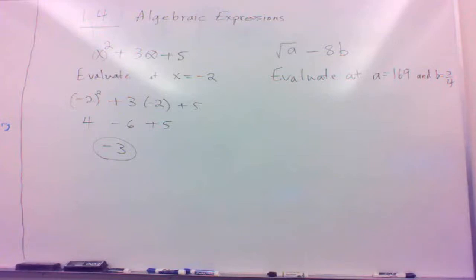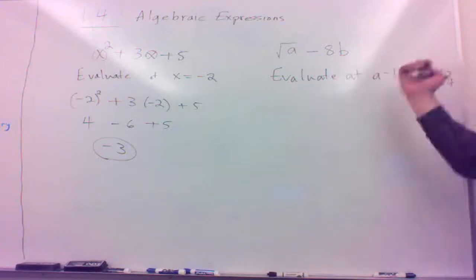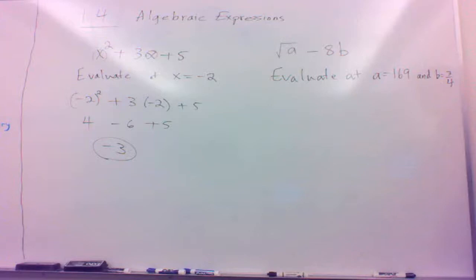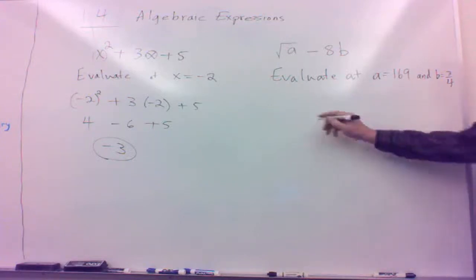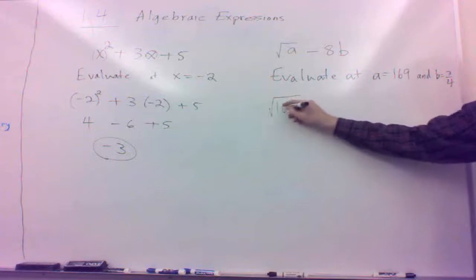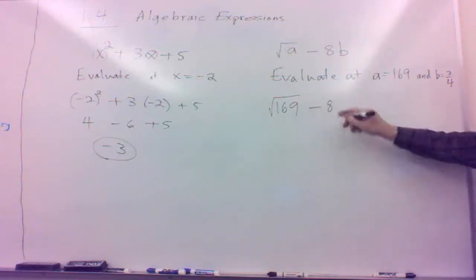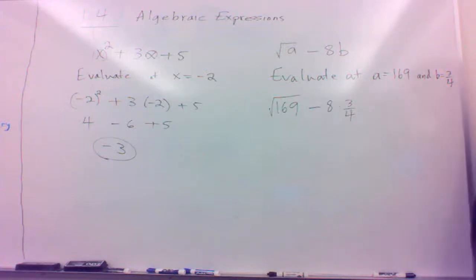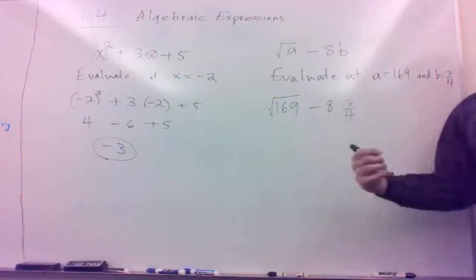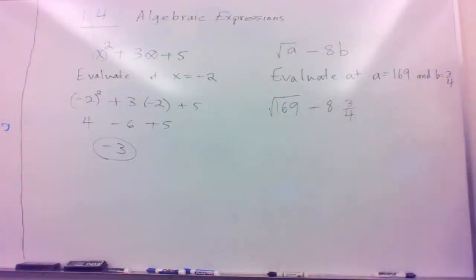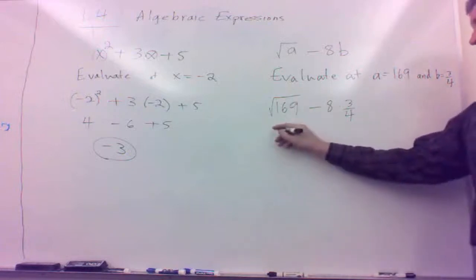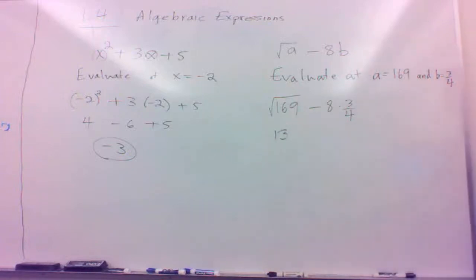Let's hit a couple of quick notes here. In this case we've got two variables, a and b. We're choosing a to be 169, so I'm going to plug in the a — it would be the square root of 169 — then minus 8 times b, which is 3 fourths. The square root of 169 means what would you square to get 169? Well, that's 13.